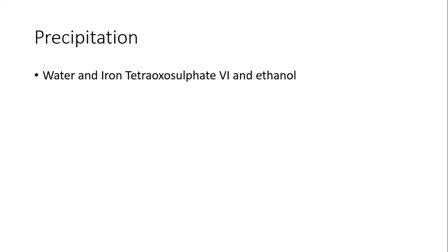Next is precipitation. For example, iron(II) tetraoxosulfate is soluble in water. If ethanol is added to that solution, the iron(II) tetraoxosulfate will be precipitated out because ethanol is more soluble in water than the iron compound. Precipitation means something was in solution, you add another substance, and the first is forced out of solution.